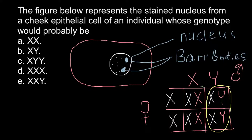As you can see, the mother can donate an X chromosome, and all male progeny would have an X chromosome from the mother's side and a Y chromosome from the father's side. All females would have one X chromosome from the mother's side and one X chromosome from the father's side.